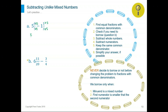Rewrite the problem: we have five and six times three is 18 over 15, minus one and one times five is five over 15. Now we try to subtract. To decide if we need to borrow: look at the numerators. If the first numerator, 18, is greater than five — which it is — we do not need to borrow. Five minus one is four. 15 stays in the denominator. 18 minus five is 13. This is your final answer.